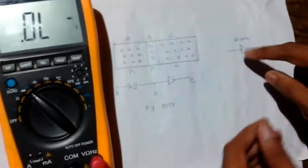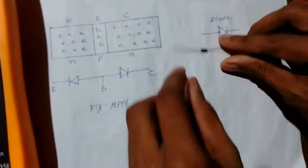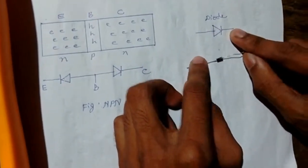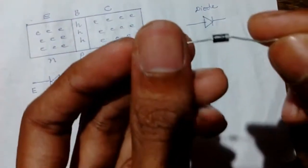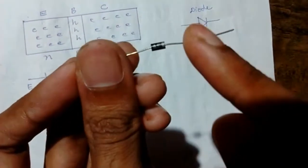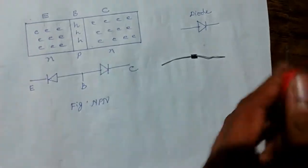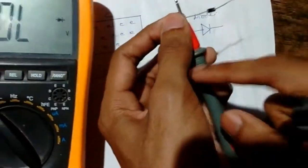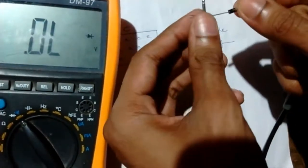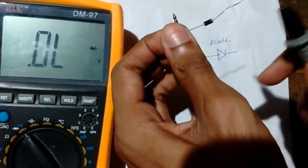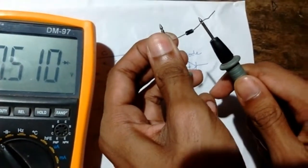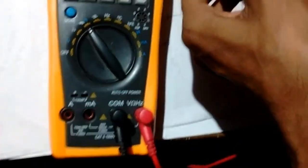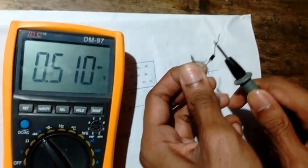Let's first see what is happening with the diode. This is the positive terminal of the diode and this is the negative terminal. You can see this side is positive and this side is negative. When we connect the positive terminal of the DMM to the positive side, you can see there is a voltage drop across this diode — it is around 0.51.